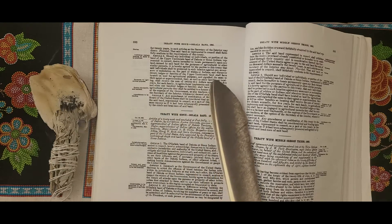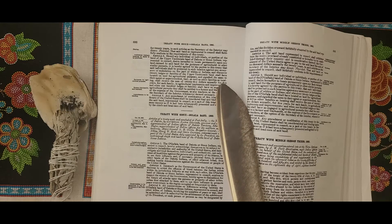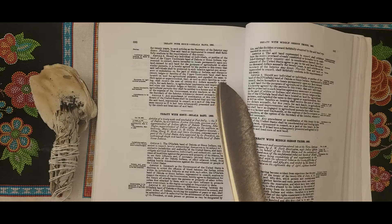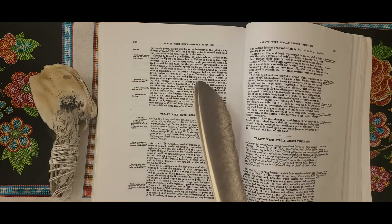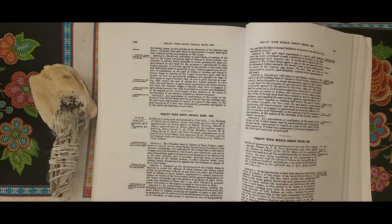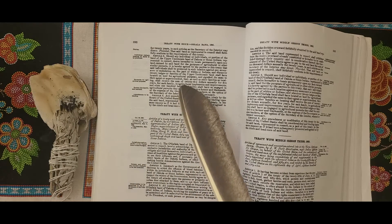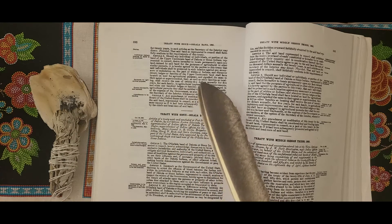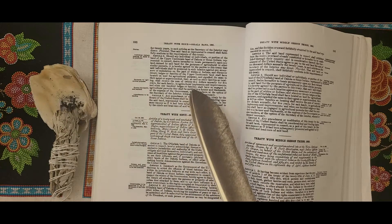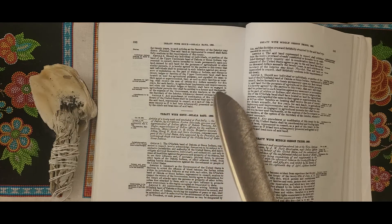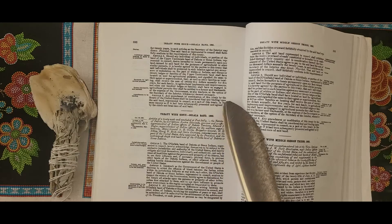Whenever twenty lodges or families of the Upper Yanktonai Band shall have located on lands for agricultural purposes and signify the same to their agent or superintendent, they, as well as other families so locating, shall receive the sum of twenty-five dollars annually for five years for each family in agricultural implements and improvements. When one hundred lodges or families are so engaged in agricultural pursuits, they shall be entitled to a farmer and a blacksmith at the expense of the government, as also teachers at the option of the Secretary of Interior whenever deemed necessary.